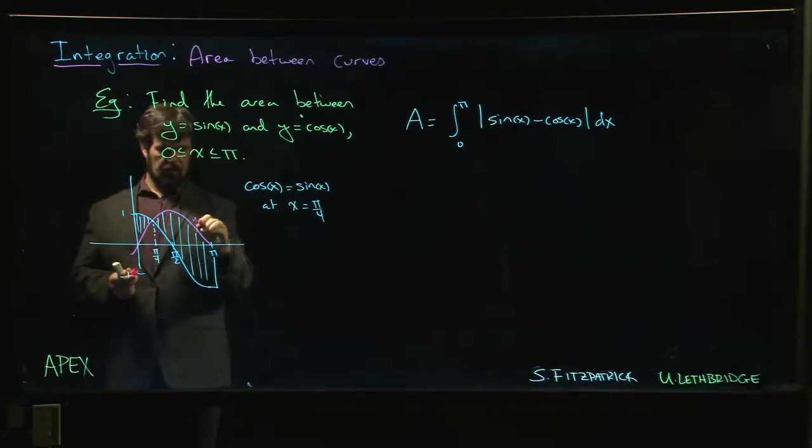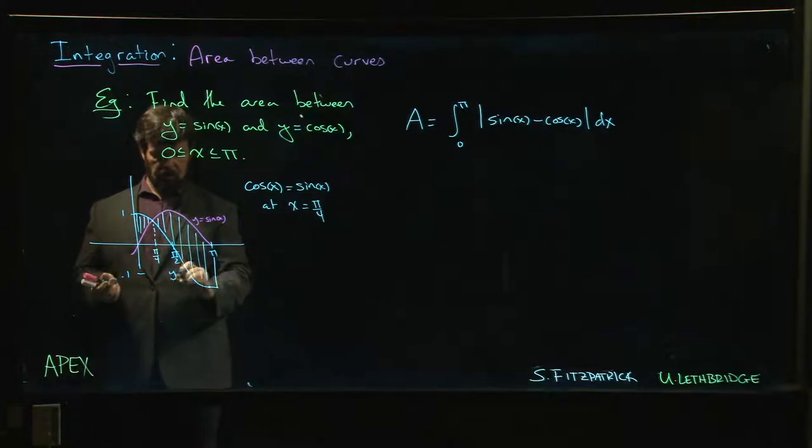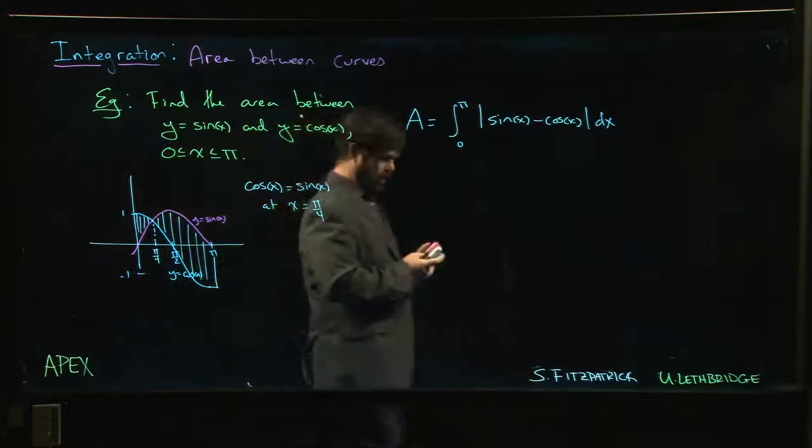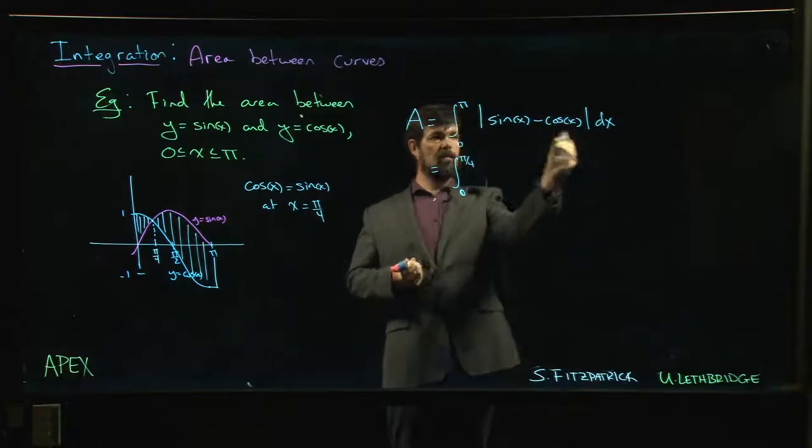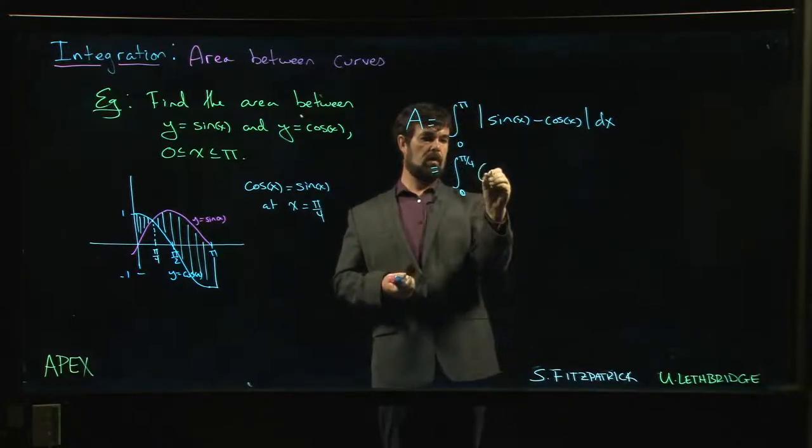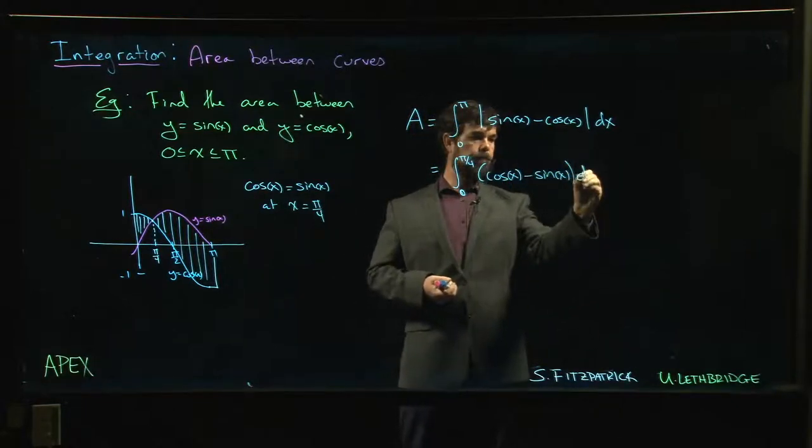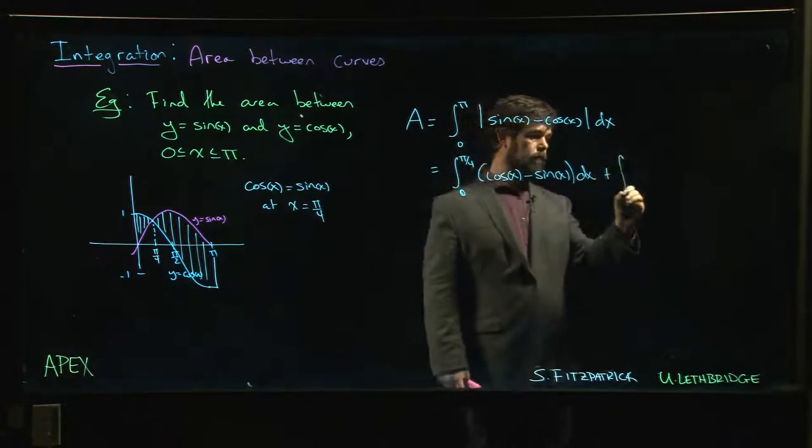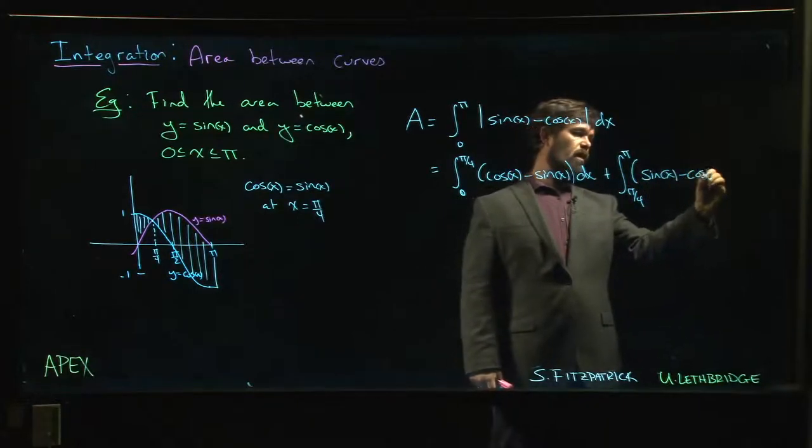Sine is the upper curve from π over 4 to π, but not from 0 to π over 4. That means we have to split up the integral. From 0 to π over 4, the absolute value of sine minus cos is cos minus sine, right? Cosine is on top for this interval. From π over 4 to π, it's sine that's on top.